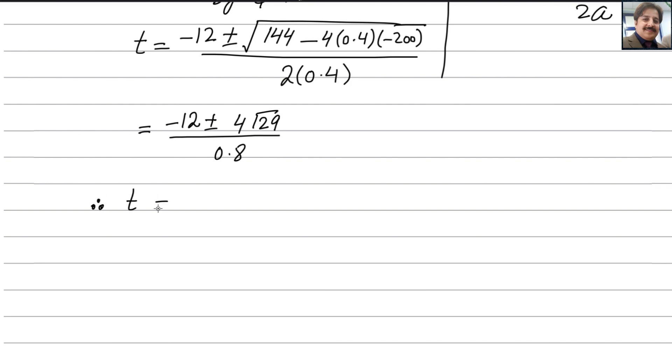There are two answers for t, but we take only the positive value because time cannot be negative. You can reject the negative value. The positive answer is negative 12 plus 4 square root 29 divided by 0.8. t equals 11.9 seconds. We write the answer to 3 significant figures. This is the answer for this part.